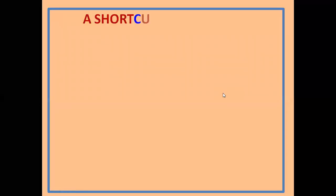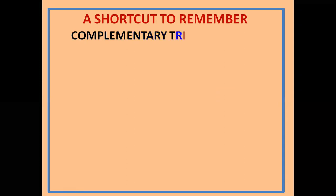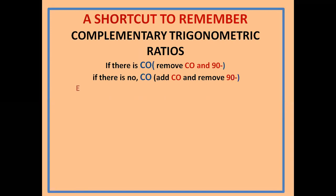This video shows a shortcut to remember complementary trigonometric ratios. If there is 'co', remove 'co' and '90 minus'. If there is no 'co', add 'co' and remove '90 minus'. For example: